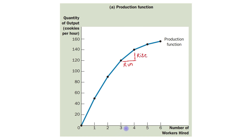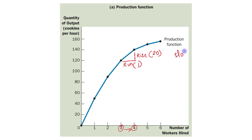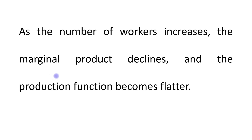When the number of workers increases from 3 to 4, the output level increases from 120 to 140. So the slope is 20 upon 1, which is 20. As the number of workers increases, marginal product declines and the production function becomes flatter.